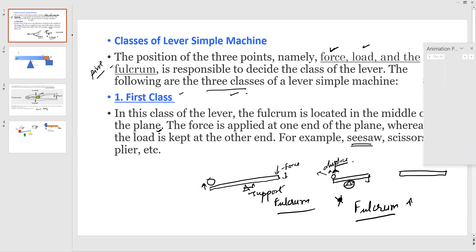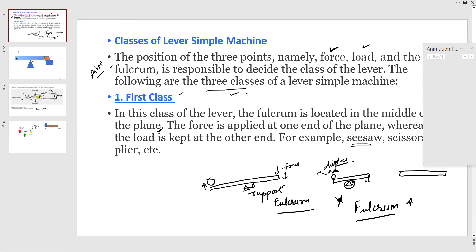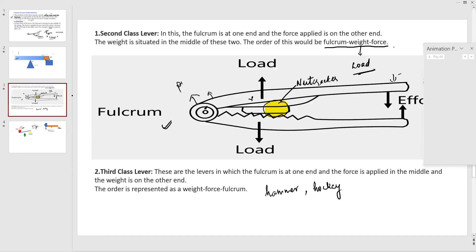Talking about the second class lever, the fulcrum is at one end and force is applied on the other end. So the weight is situated in the middle of these two. In second class, the load is in between.